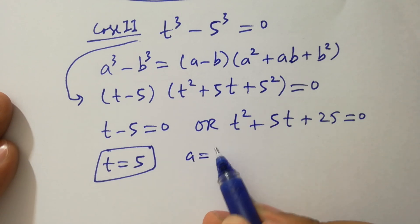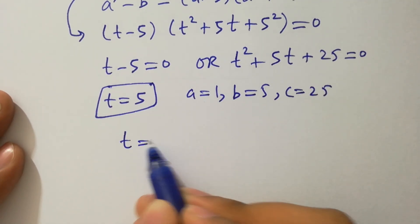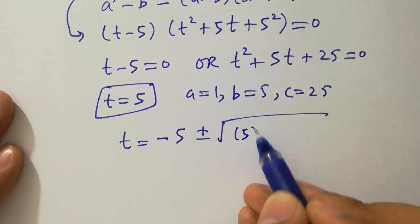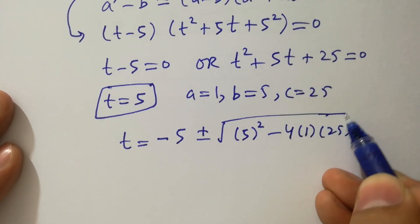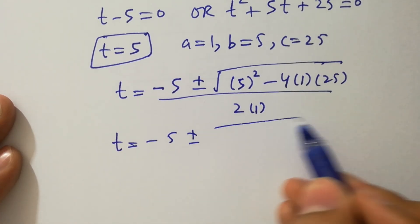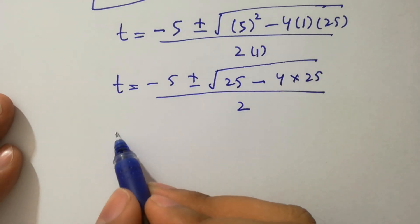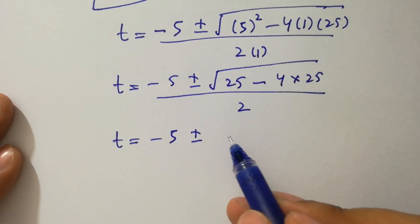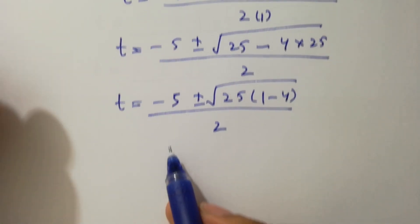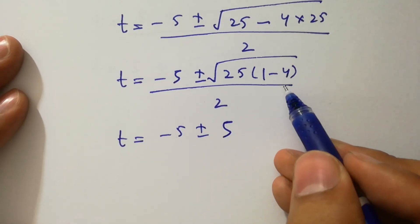For the quadratic in Case 2, a equals 1, b equals 5, c equals 25. Applying the quadratic formula: t equals minus 5 plus or minus square root of 5 squared minus 4 times 1 times 25, over 2. This gives t equals minus 5 plus or minus square root of 25 minus 100, over 2, which is t equals minus 5 plus or minus square root of 25 times 1 minus 4, over 2, giving t equals minus 5 plus or minus 5 times square root of minus 3, over 2.